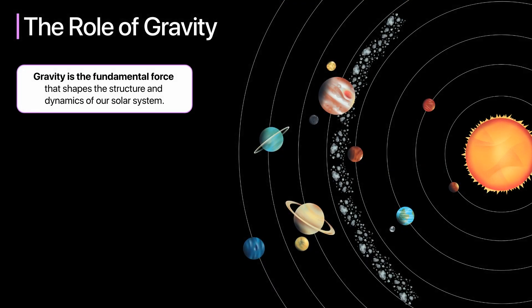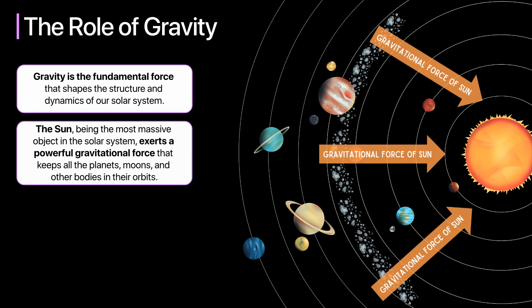Now let's look at the role of gravity. Gravity is the fundamental force that shapes the structure and dynamics of our solar system. The Sun, being the most massive object in the solar system, exerts a powerful gravitational force that keeps all the planets, moons, and other bodies in their orbits.